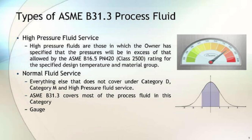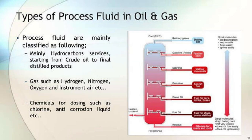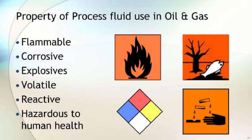Type 2 — Everything else that does not fall under Category D, Category M, and High Pressure Fluid Service. ASME B31.3 covers most of the process fluid in this category. Types of process fluid in oil and gas: process fluids are mainly classified as follows — mainly hydrocarbon services, starting from crude oil to final distilled products; gases such as hydrogen, nitrogen, oxygen, and instrument air; and chemicals for dosing such as chlorine, anti-corrosion liquid, etc.